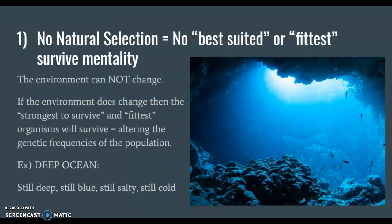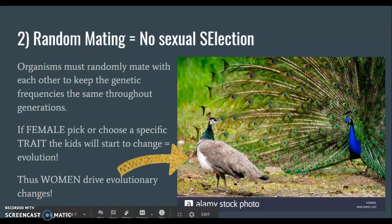No natural selection means that survival of the fittest is no longer applied. The environment cannot change — natural selection favors organisms best suited for their specific environment, so if the environment doesn't change, why would the organisms change? A classic example is the deep ocean: it's still blue, still really dark, still cold, still salty. The organisms have had that environment for millions of years and have never been forced to change.